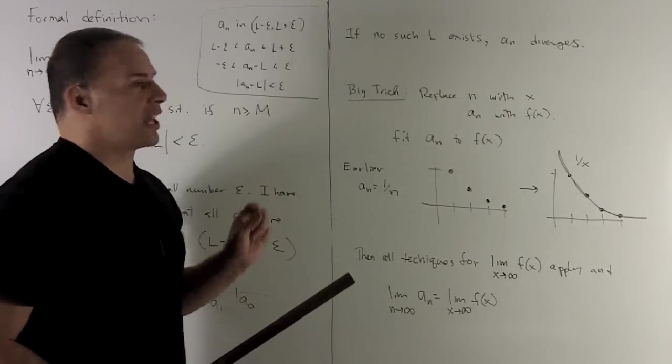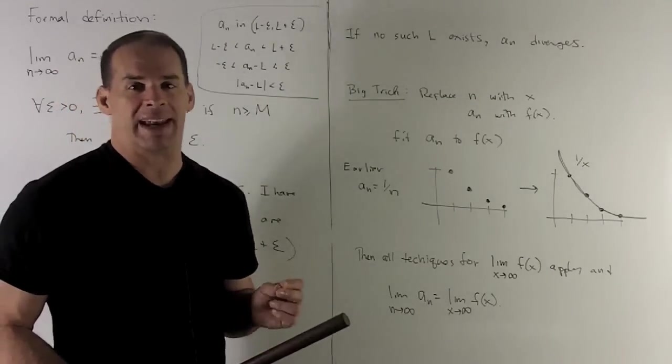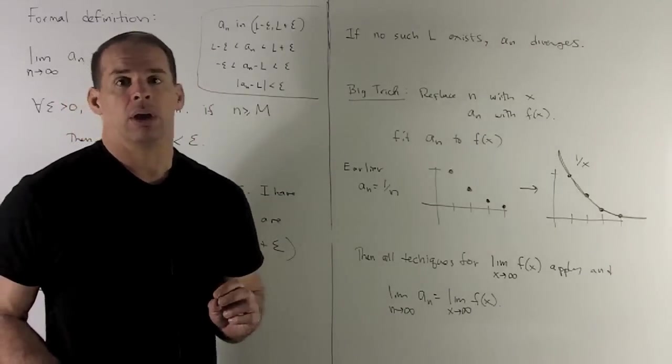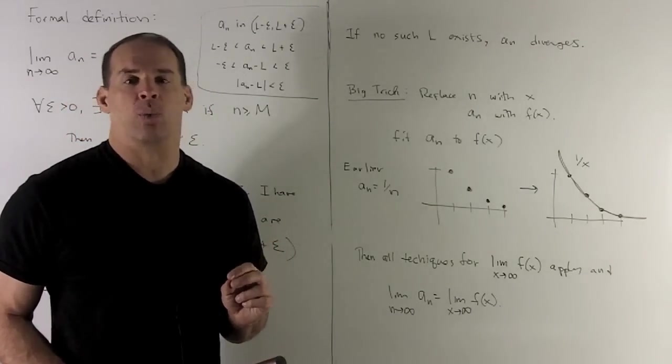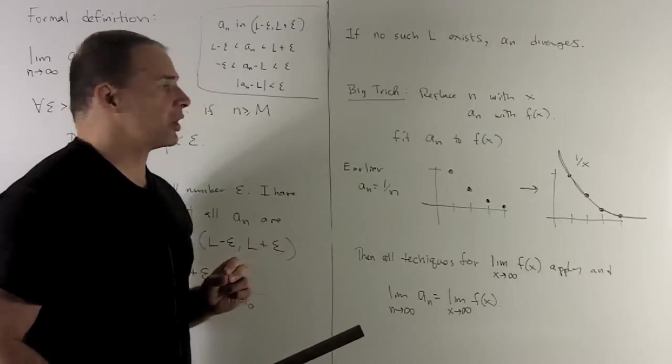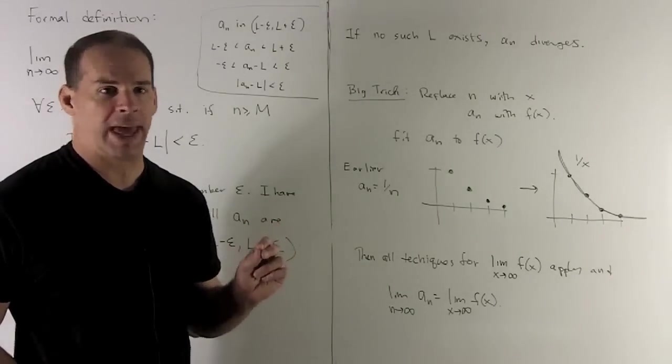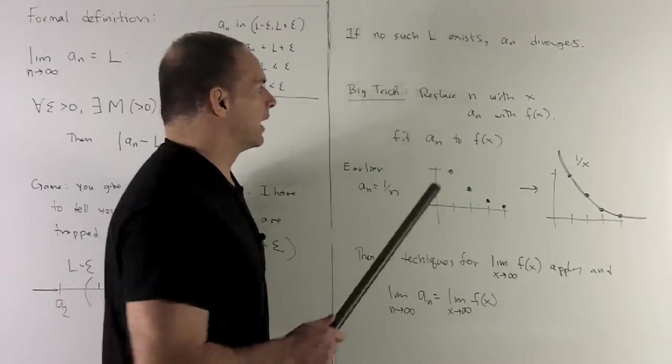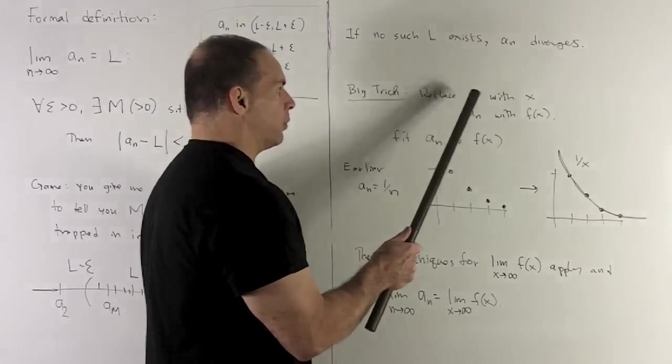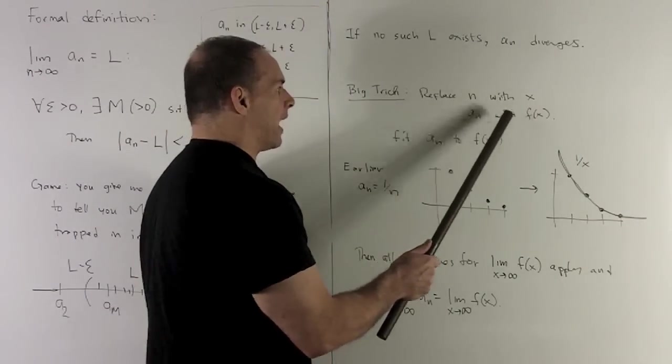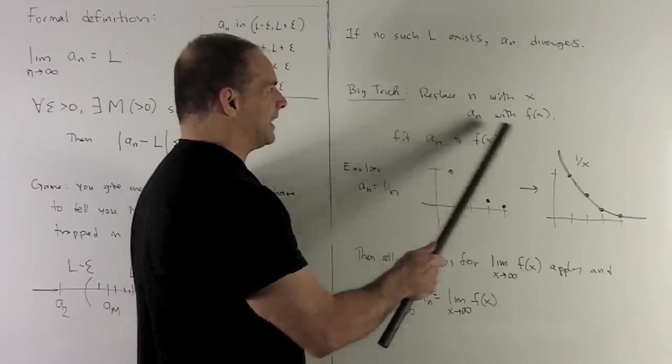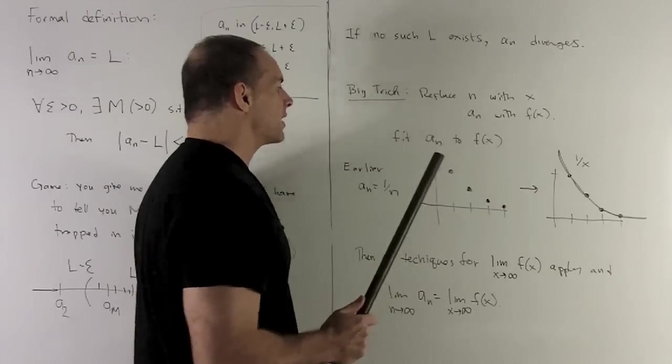Now, if no such L exists, we're going to say that a sub n diverges. For finding limits, we have one really big trick, which is just going to be fit your sequence to a function and then see what happens. So what I can do is I'll replace n with x, a sub n with f of x. And so the idea here is I want to fit a sub n to f of x.